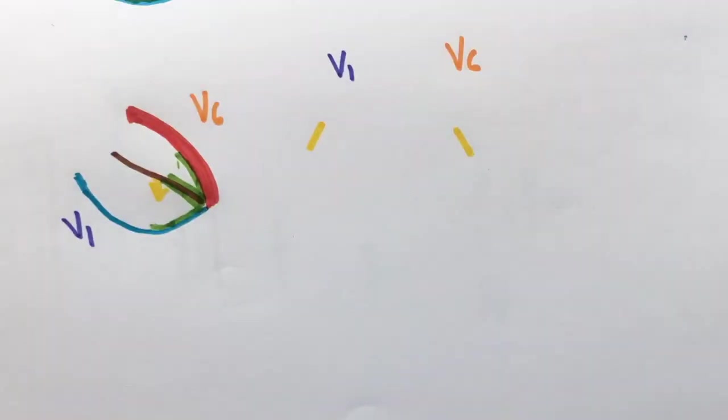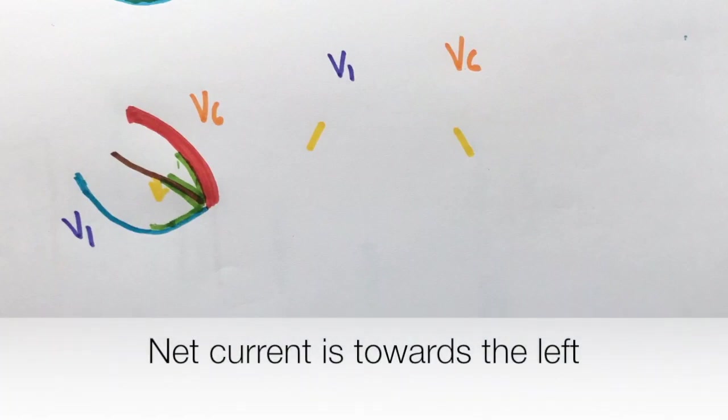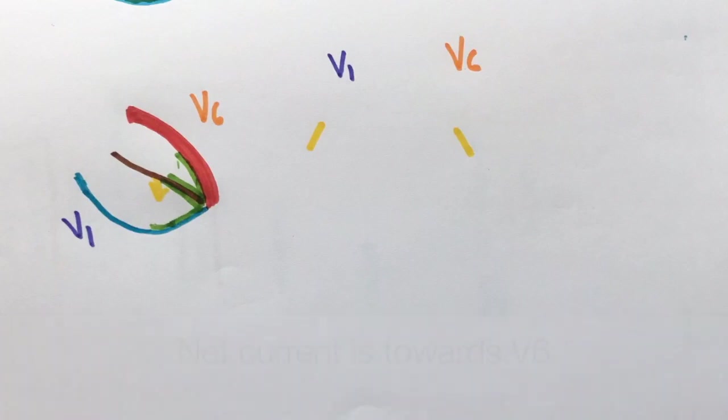Then, the impulse is moved to both sides of the heart. The left ventricle is thicker than the right ventricle. So although the impulses are travelling in both ventricles, the net current is towards the left. In other words, towards V6 and away from V1. Hence, this will be upwards in V6 and downwards in V1.